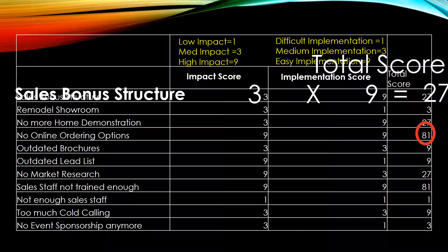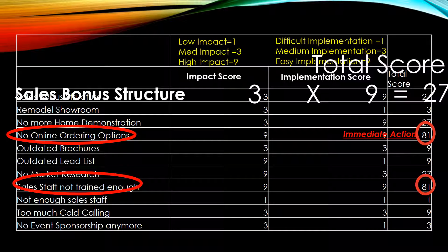Ultimately, what you're really going to look for and zero in on is anything that's an 81. If it's an 81, that means the group decided it had very high impact and it was very easy to implement. You want to focus on these first as your main priority to take immediate action on — it's easy to do and it has big impact. These things tend to be the type of items you're a little embarrassed about, like why weren't we doing this in the first place? Those are good finds, and if you're only able to do a handful, those are the handful you should do.